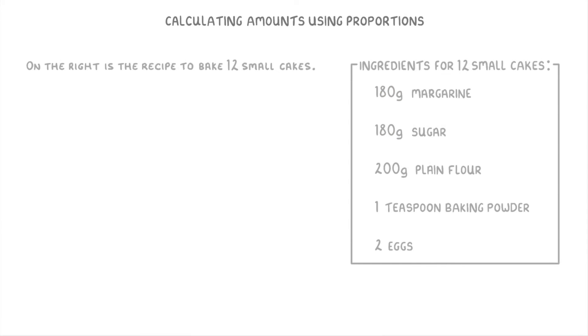On the right is the recipe to bake 12 small cakes. If Elsa wants to bake 18 small cakes, how much sugar will she need?